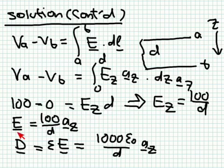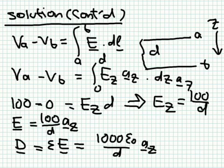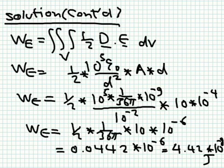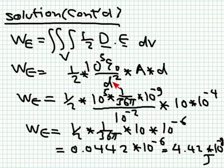Knowing E, we find D = εE = ε_r ε₀ E. With εr = 10, D = 1000 ε₀/d in the z-direction. To get the stored energy, we take the dot product of D and E, multiply by one half, and integrate over the volume. Because the field is uniform, we simply multiply the energy density by the volume A × d. This gives W = ½ × (1000 ε₀/d) × (100/d) × A × d.